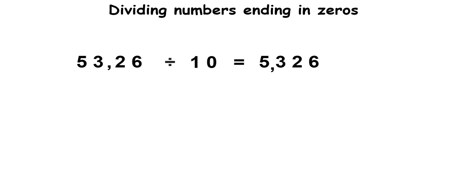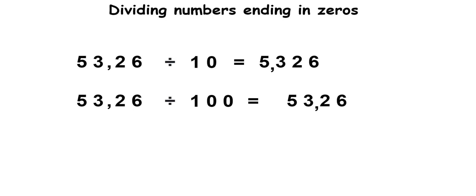This is because every single digit in our number has become 10 times less valuable. So, moving our decimal one space to the left really means we've pushed each digit one space to the right. If you take the same number and divide it by 100, you would be making it 100 times smaller, which means the decimal would need to be moved two spaces to the left, because every single digit has become 100 times less valuable.